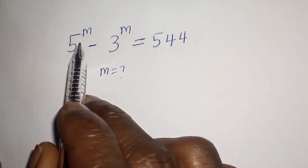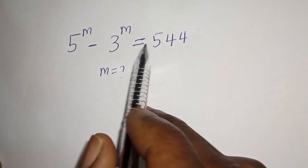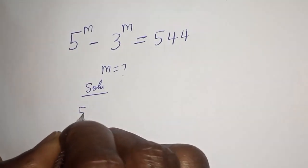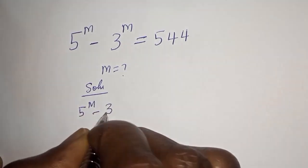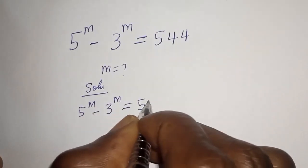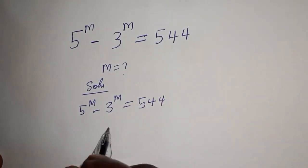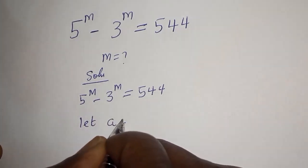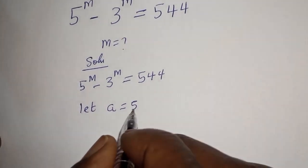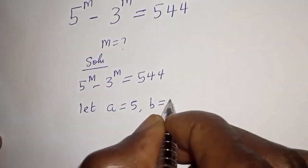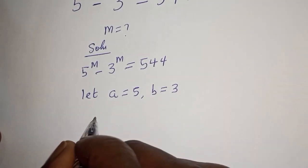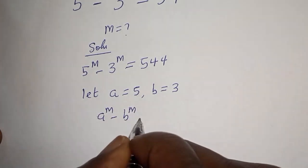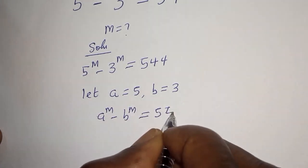How to solve for m from this problem: 5 raised to power m minus 3 raised to power m is equal to 544. Let a equal 5 and b equal 3. Therefore, a raised to power m minus b raised to power m will be equal to 544.